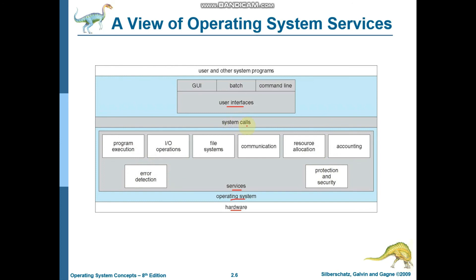In the diagram, there is a system call. There is a user mode, and the system call enables entry into kernel mode. So in user mode, the kernel mode is entered by using a system call. In every operating system there are user interfaces, and user interfaces are a major responsibility of the operating system. You can see the GUI, batch interface, and command line interface that we have studied. I hope this diagram makes things clearer.